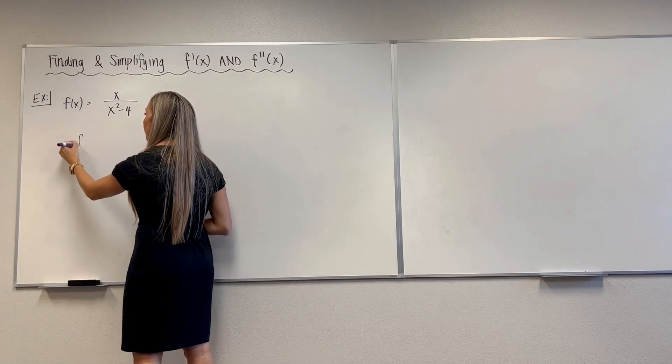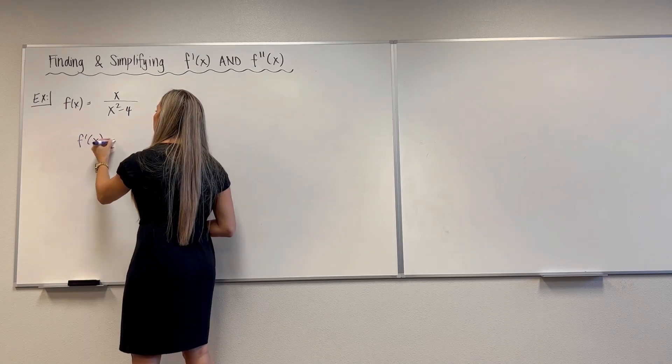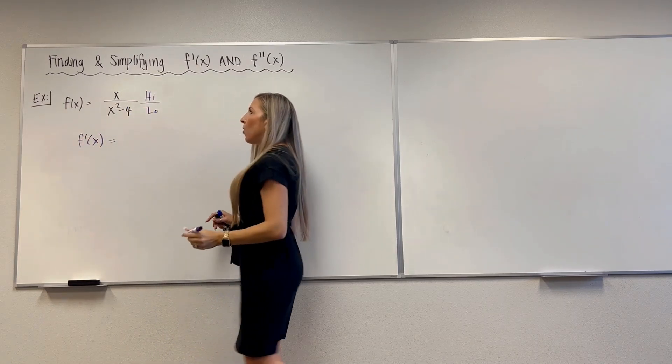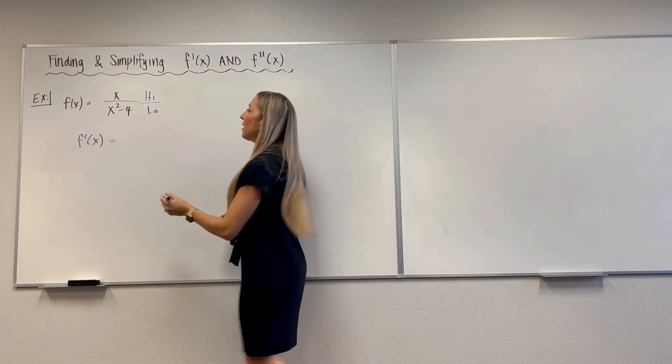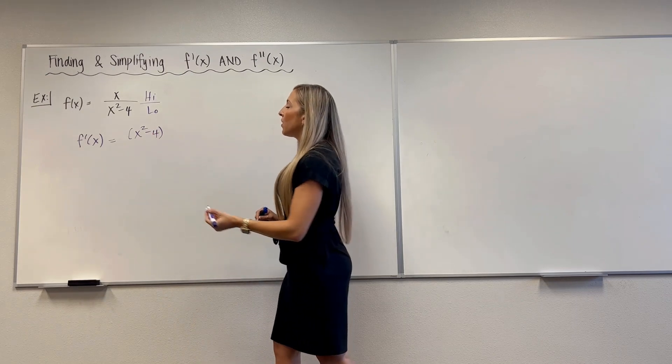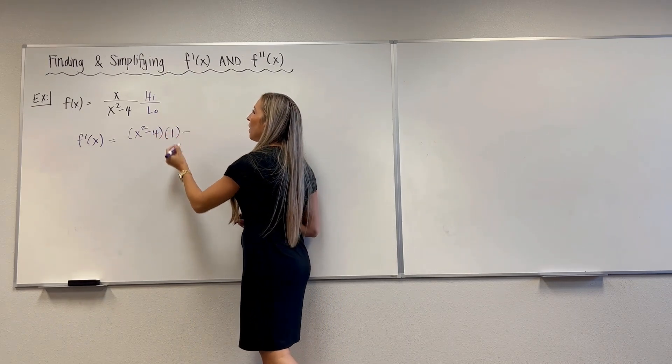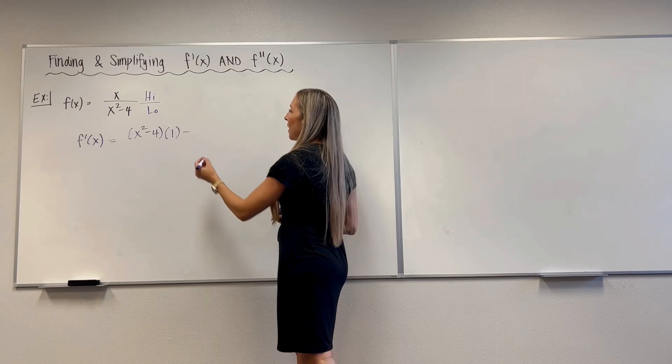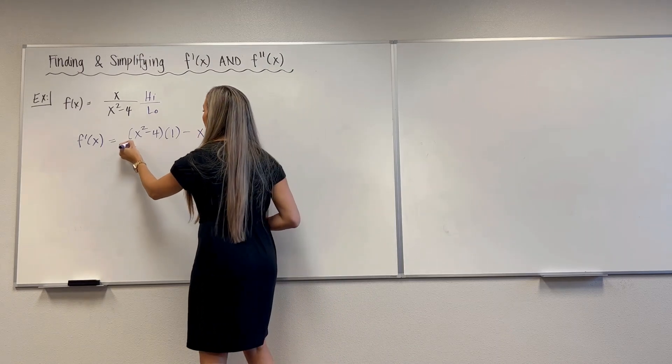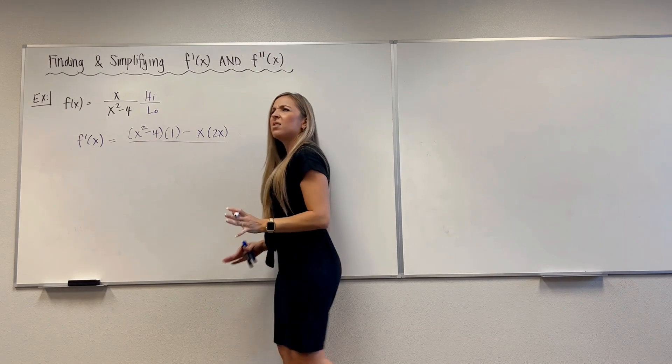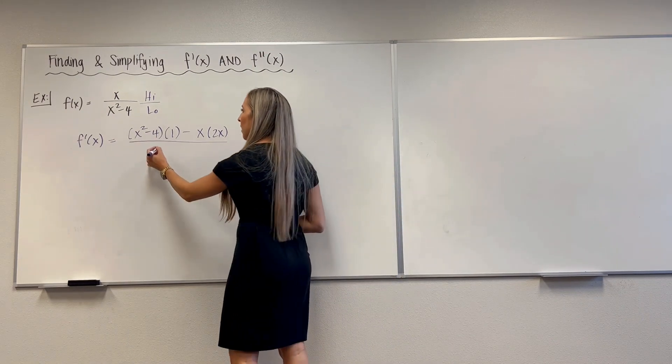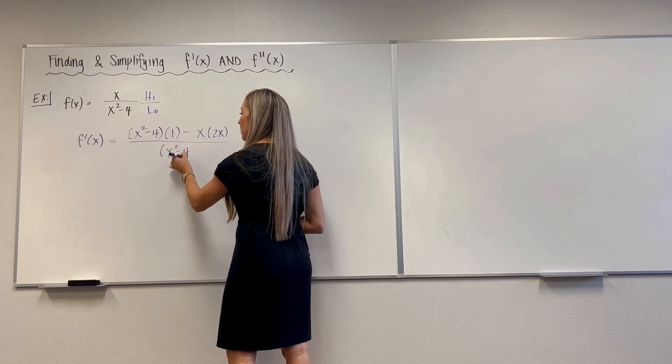Let's go ahead and apply the quotient rule to find the derivative. I like to sing a little song. So this is high over low. We've got low d high. So low, the denominator. D high means derivative of the numerator. So that would be 1. Low d high minus high. D low is 2x over low, low. I've also heard the remix, square the bottom away you go. So that would be x squared minus 4 squared.